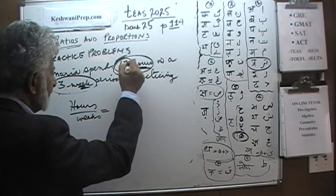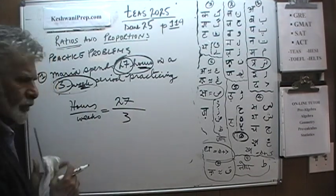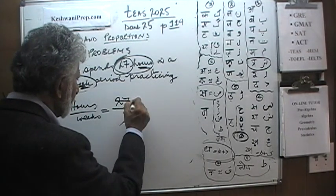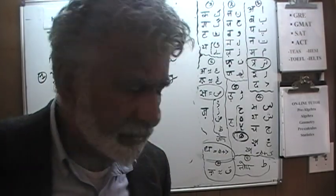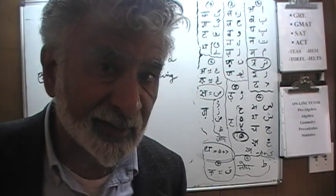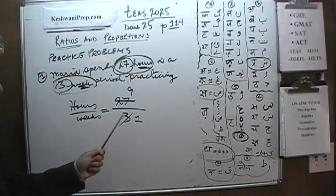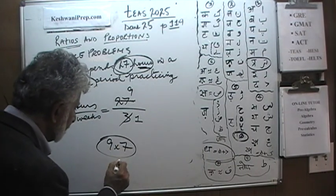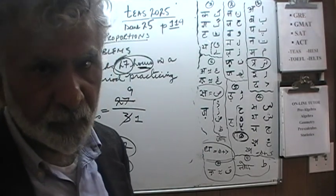We are told that she practices 27 hours in a period of 3 weeks. Divide top and bottom by 3. If you divide top and bottom by 3, 3 will become 1 and 27 will become 9. So if you practice 27 hours in 3 weeks, which is same as 9 hours per week, then of course in a period of 7 weeks, it will just be 9 times 7, which is 63 hours. Which is exactly what we found a second ago.